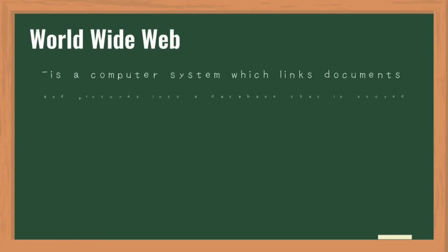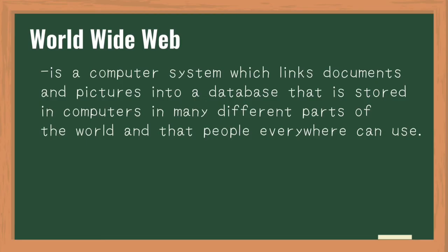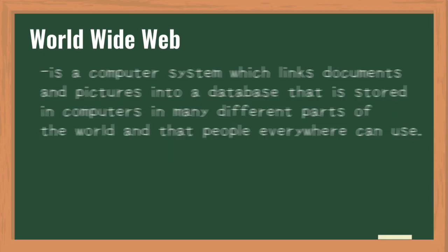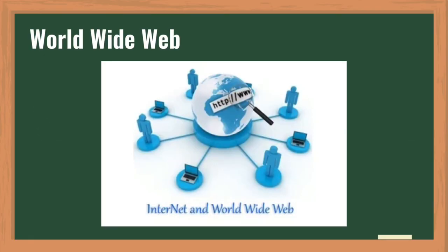The World Wide Web is a computer system which links documents and pictures into a database stored in computers in many different parts of the world that people everywhere can use. It is a network of online content formatted in HTML and accessed via HTTP, referring to all the interlinked HTML pages that can be accessed over the internet.